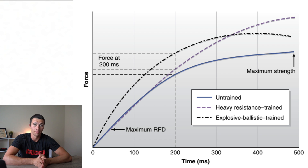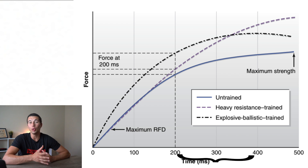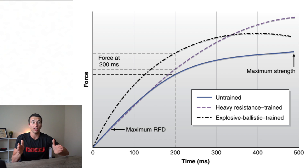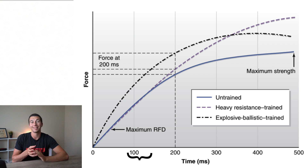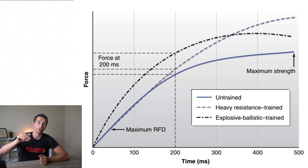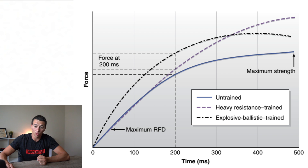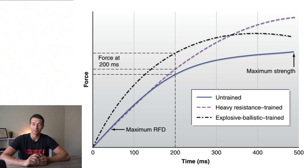How does this affect training decisions? For a sprinter in the acceleration phase — when you're off the blocks — you'll have anywhere from about 0.2 to 0.4 seconds of ground contact time per foot contact. As you get faster, that ground contact time shortens all the way down to 0.09 to 0.12 seconds. That means the athlete has a very short window to put force into the ground, so high rate of force development is critical — specifically, producing high force at that 0.1-second mark is what separates elite sprinters.